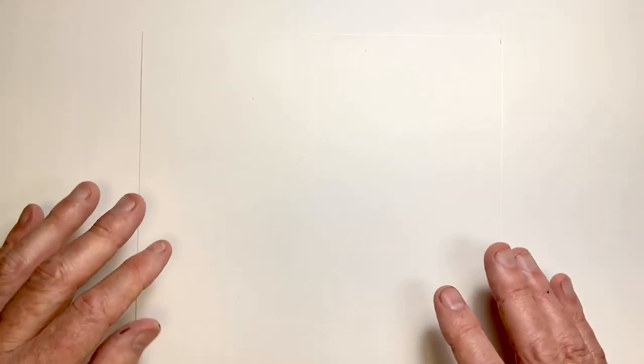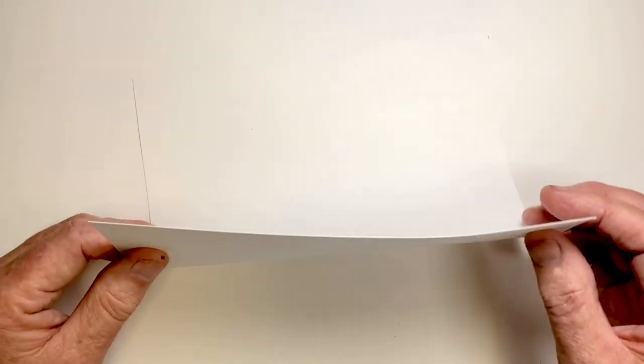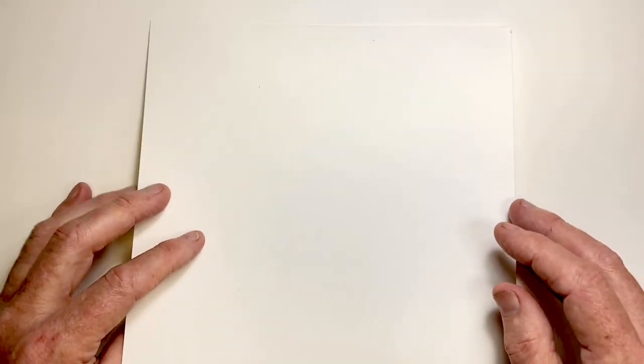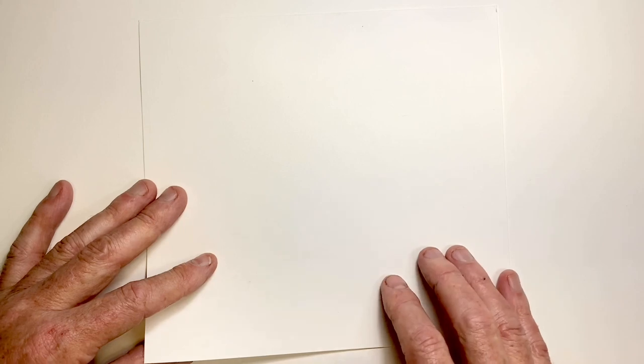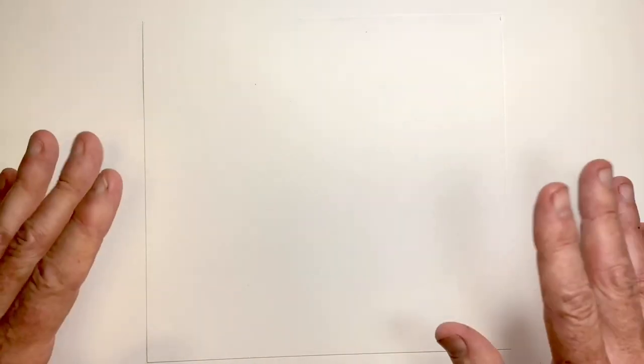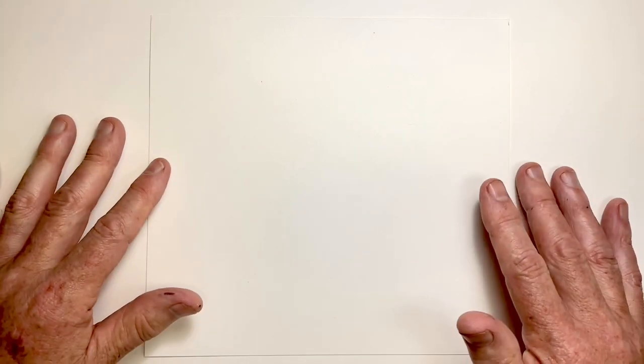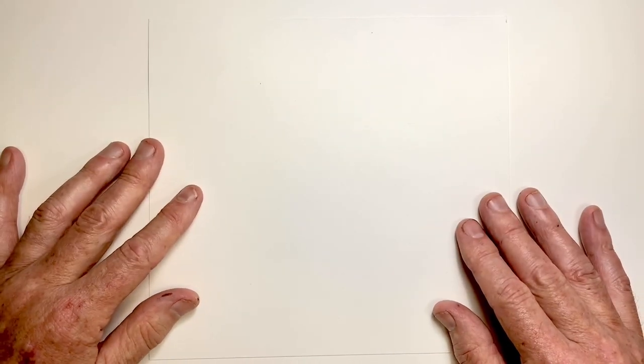First, get a sheet of paper that's the same paper as you draw on and have facing upwards the same side of the paper that you normally draw on. This is important because papers are very different and they respond to ink differently, so it's important to have the same paper conditions for this.